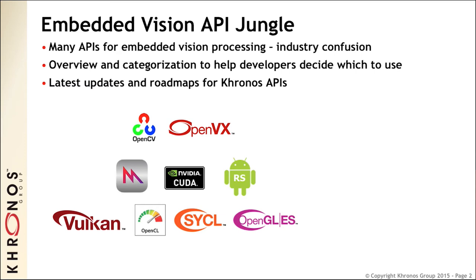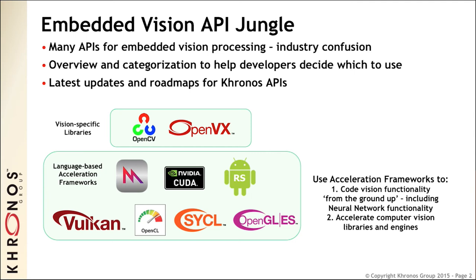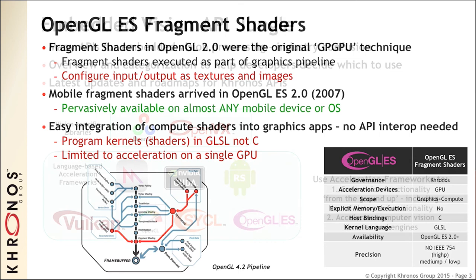Is it just a soup, or is there some order to this? Well, there is some order. The first obvious way to slice and dice is that a couple of these are out-of-the-box high-level vision libraries with vision functionality baked in, whereas all the others are kind of low-level, general-purpose programming frameworks — typically with some kind of parallel processing for performance and power — that you can certainly use for vision processing. You can roll your own vision functionality, your own neural net functionality as we saw from the keynote this morning, or you could use those low-level APIs for accelerating the high-level libraries. Let's start by looking at some of these general-purpose APIs and then work our way up.